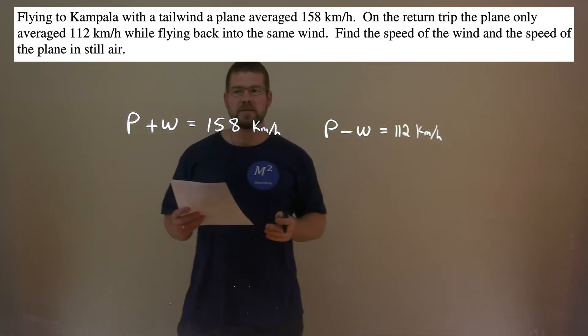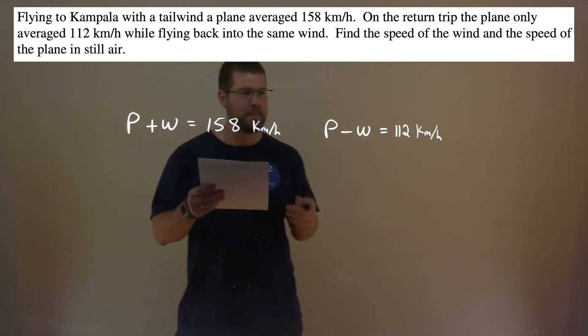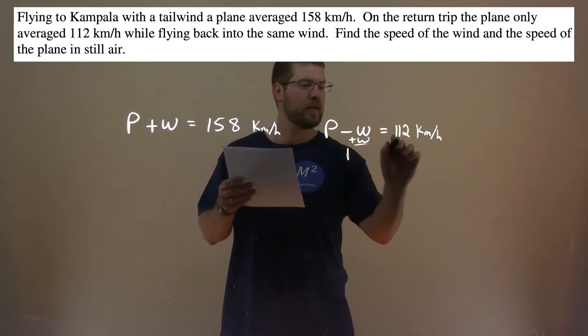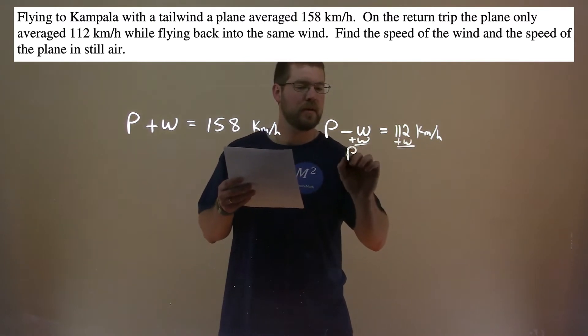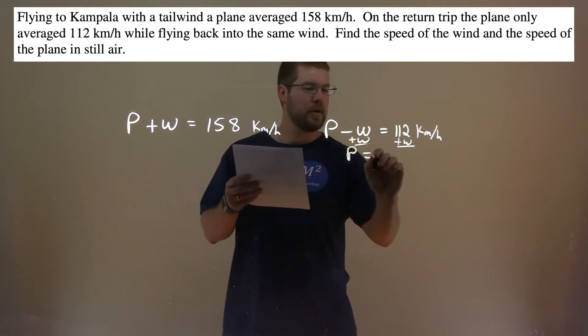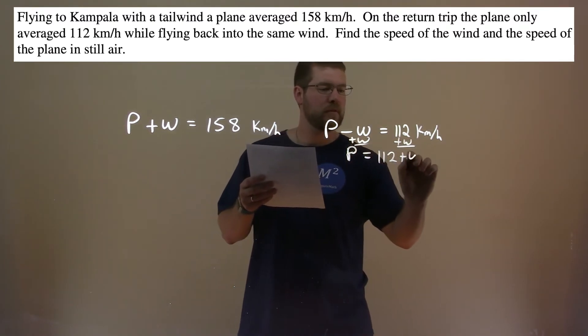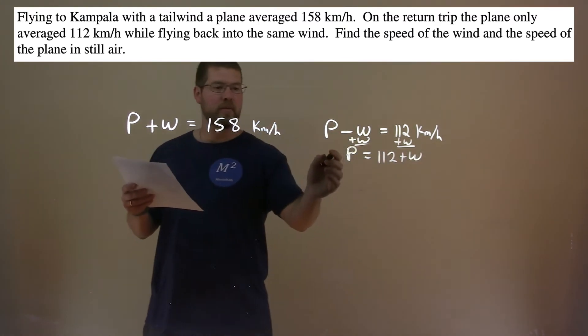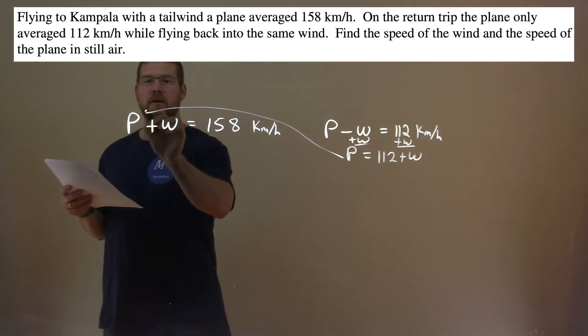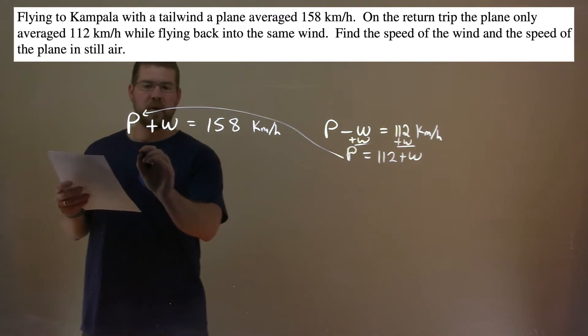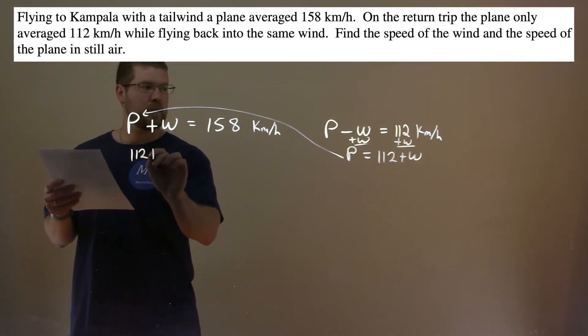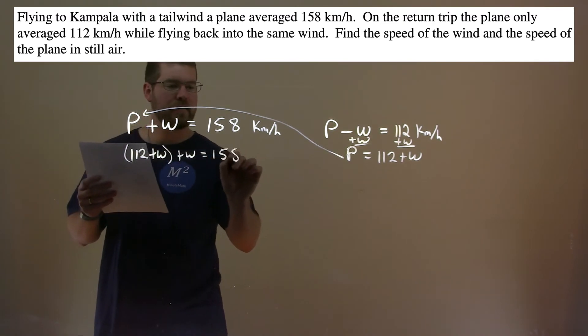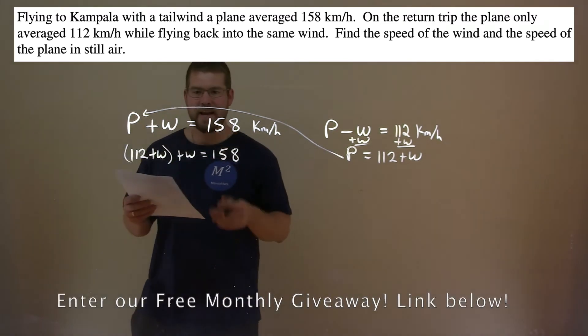Well, now we have two equations. Let's go solve that. Take the second one here. Let's get P by itself. We add W to both sides. And P equals 112 plus W. We then can take that information and we're going to plug it into P of our first equation. So we have 112 here plus W plus W equals 158. And we're solving again now for W.